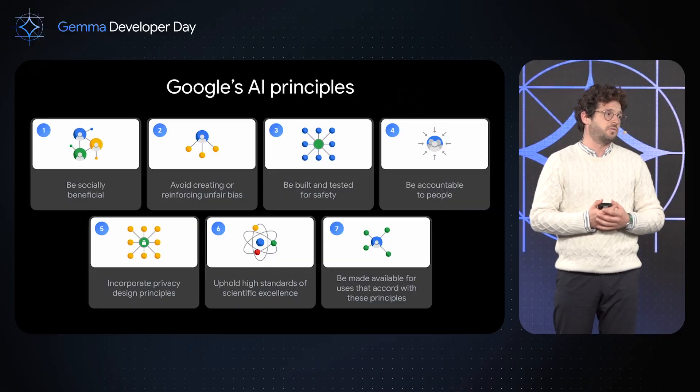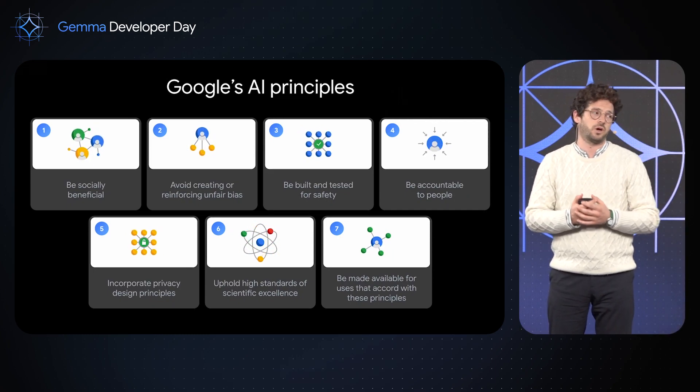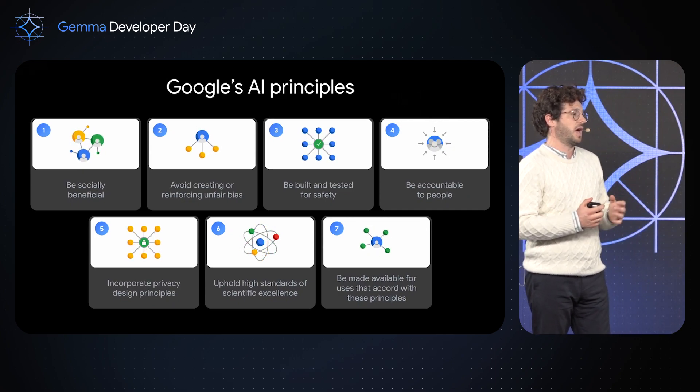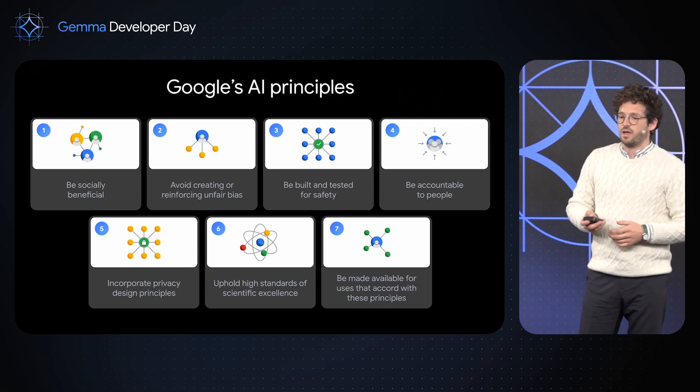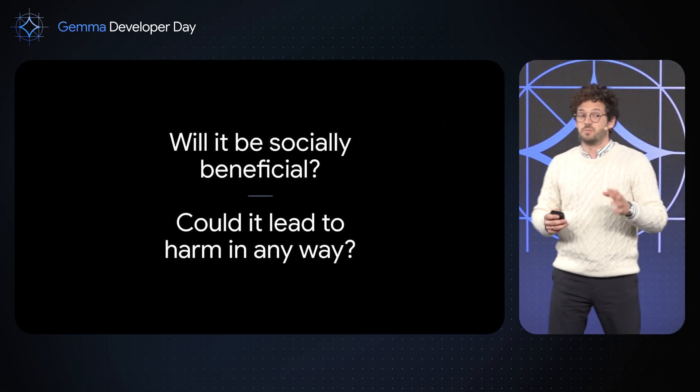At Google, this work builds on our AI principles that we first released in 2018. These principles guide the development of our Google products and help us assess every single AI application we produce. Concretely, they prompt questions like: will this application be socially beneficial? Or can this specific application lead to harm in any way? And with Gemma, since it's an open model that can be used on many different surfaces by many different actors in many different use cases, those questions are even more important for society. So for that reason, we've taken extra care when applying our principles, because AI for everyone matters only if it's safe and responsible for everyone.